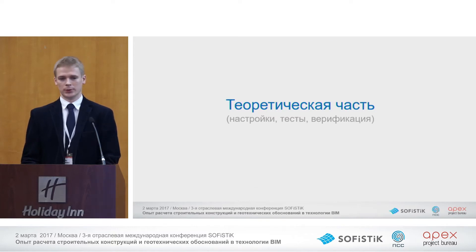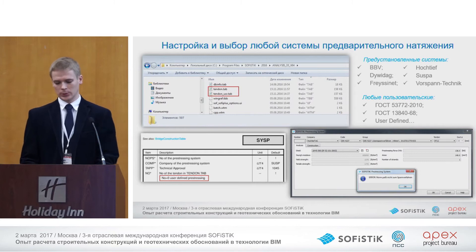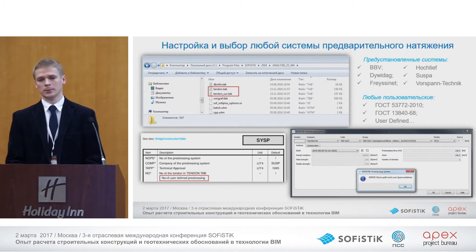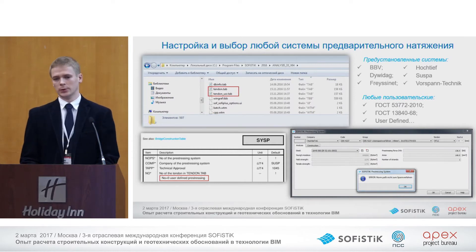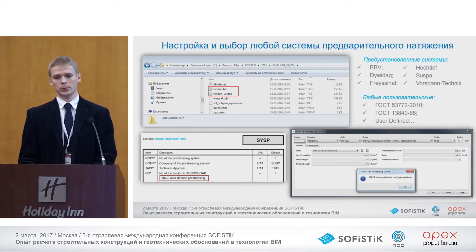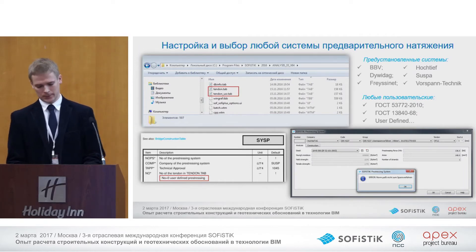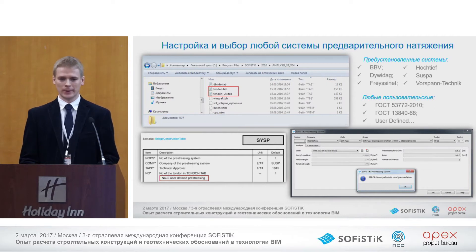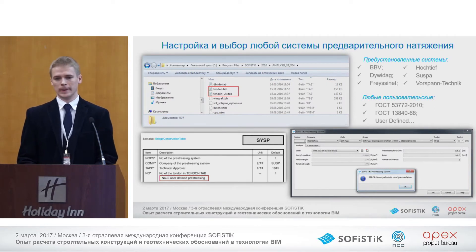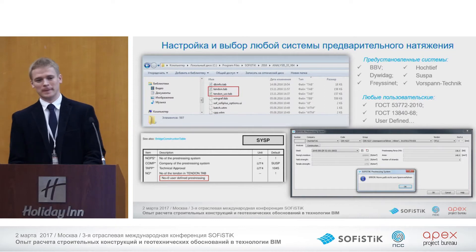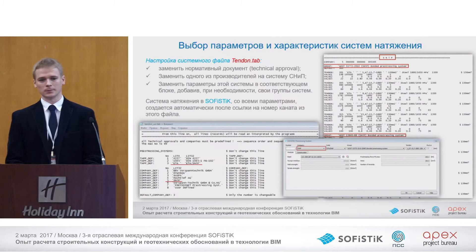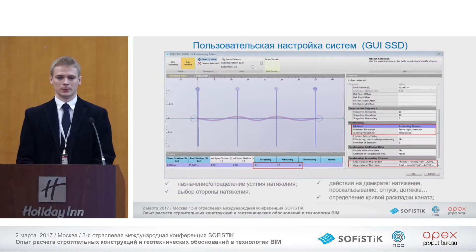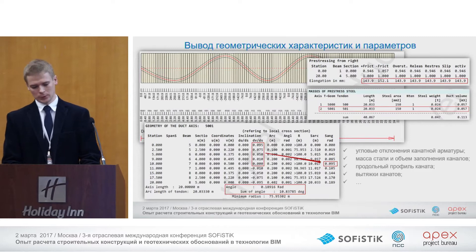Now let's go to the theoretical part. First of all, we create a system of post-tensioning. SOFISTIK suggests six systems of world-class companies with very good brand names, but you can create your own dropdown list with your settings, your companies, your subcontractors, so you can use your customized data. It's not possible to make a mistake here, and all results will be retained for further use. The system is highly adjustable.